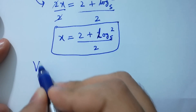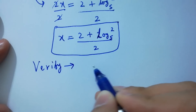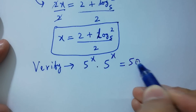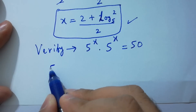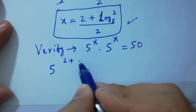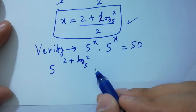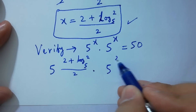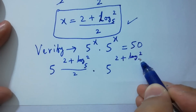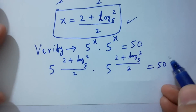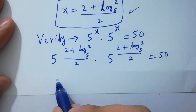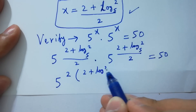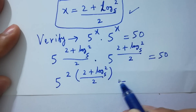In the next step I am going to verify: 5 to the power x times 5 to the power x equals 50. Put the value of x: 5 to the power of quantity 2 plus log 2 to the base 5 over 2, times itself, equals 50. Here 2 and 2 cancel.